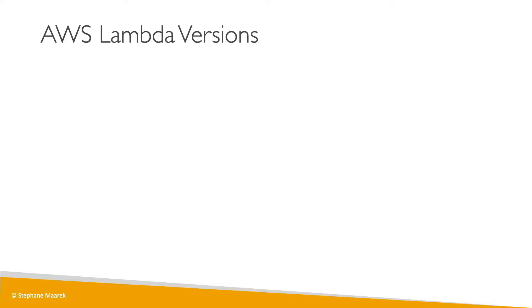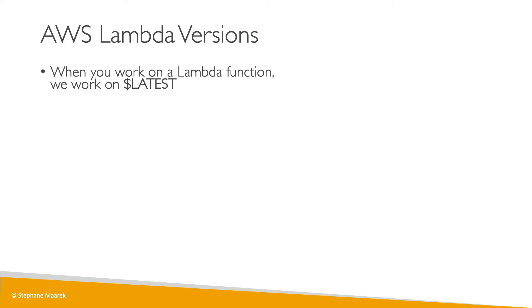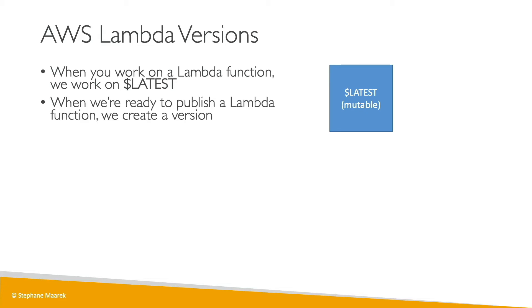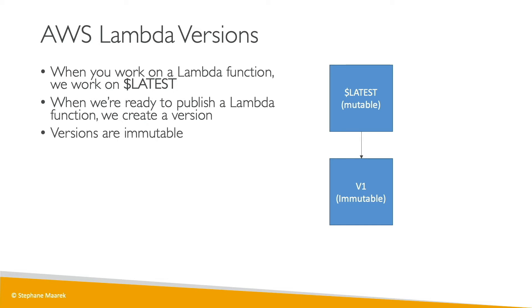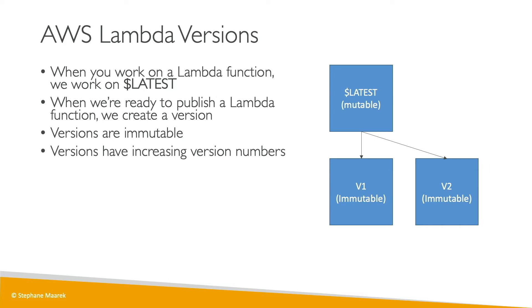Let's talk about the concepts of Lambda versions and aliases. So far when we've been working on Lambda functions, we used the $LATEST version, which was mutable because we were able to edit our code. But when we are happy with our code state, we can publish the Lambda function and create a new version. As soon as we hit publish it will become v1, and v1 is immutable — you cannot change the code, environment variables, or anything else afterwards. As you keep publishing, versions will have increasing version numbers, going from v1 to v2, etc.